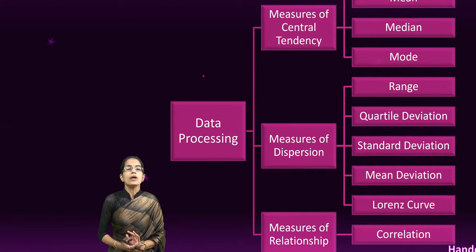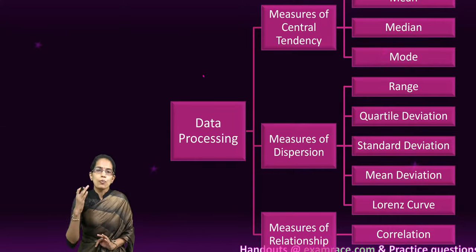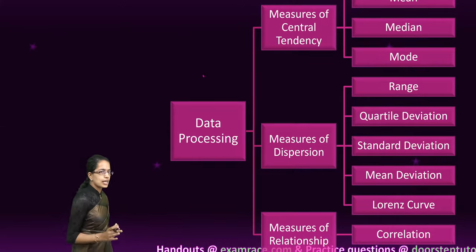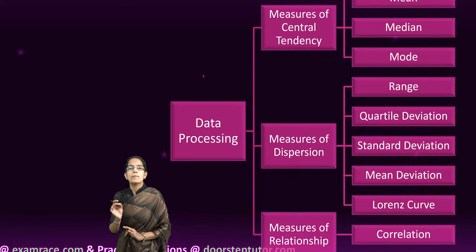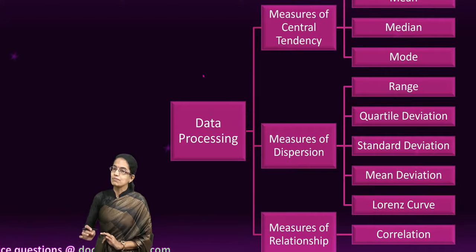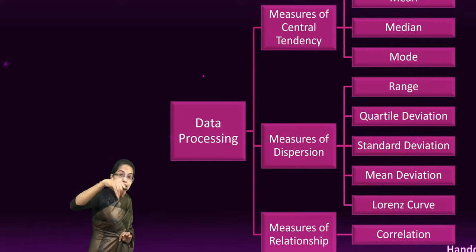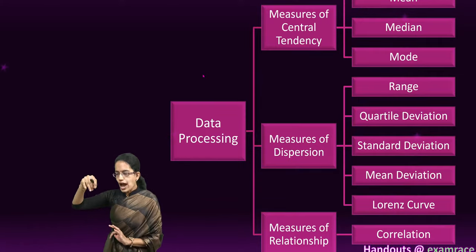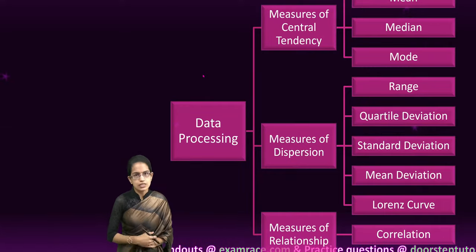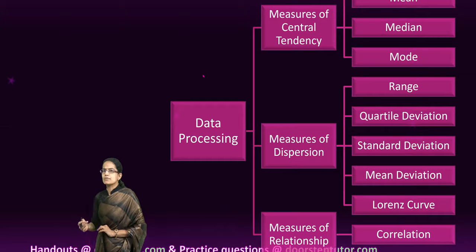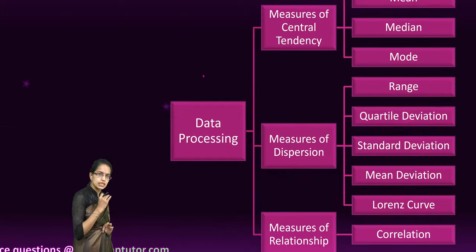Definitely it is a tedious job. So what we do is we apply certain types of mechanisms. Broadly defining, data can be processed in the simplest form using three methods: measures of central tendencies, measures of dispersion, and measures of relationship. When I say central tendency, it talks about the center of distribution — what is the tendency to cluster. To keep it very simple, we have mean, mode, and median as the measures of central tendency.